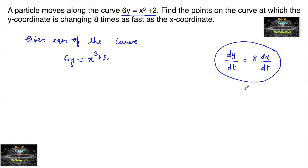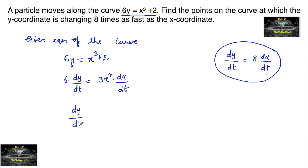This is what is given, and we need to find the points on the curve. Let's differentiate with respect to t. We have 6 times dy/dt is equal to 3x² dx/dt. We can also write dy/dt is equal to 3x²/6 dx/dt, or x²/2 dx/dt.